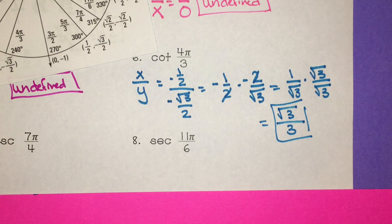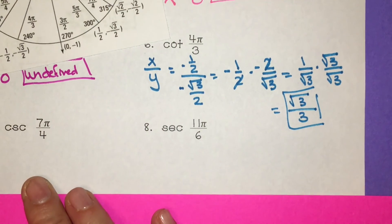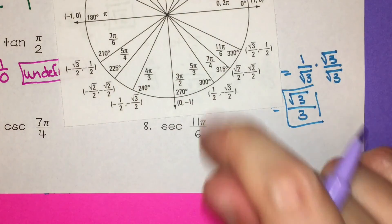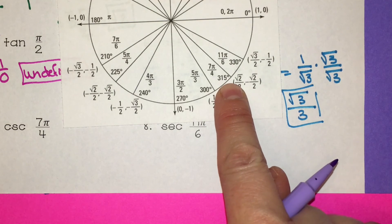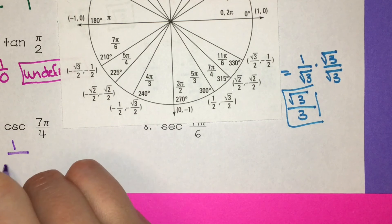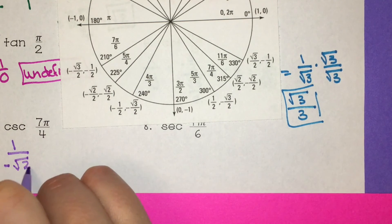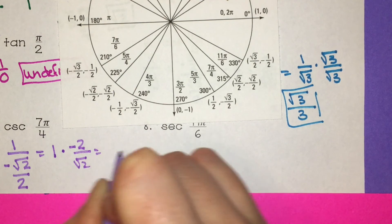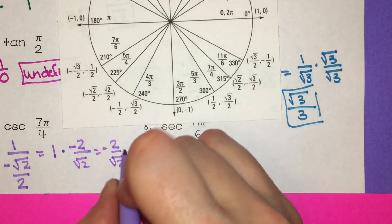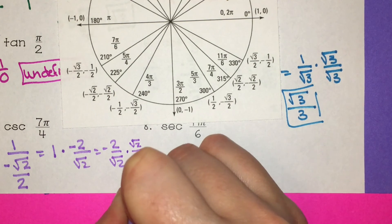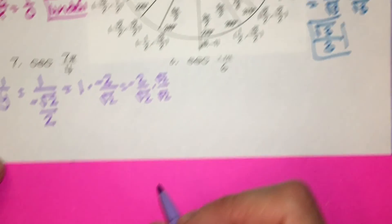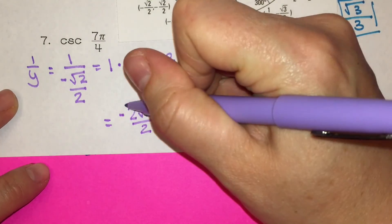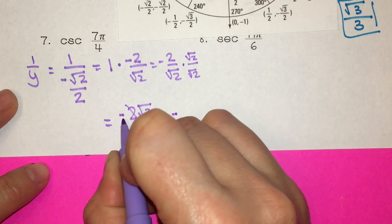Cosecant gives us 1 over y. At 7π over 4, the y value is negative, so we have 1 over negative square root of 2 over 2. Keep it, change it, flip it — giving negative 2 over square root of 2. Multiply top and bottom by square root of 2, giving negative 2 square root of 2 over 2. Simplifying, 2 divided by 2 is 1, so the answer is negative square root of 2.